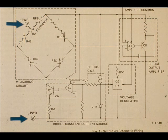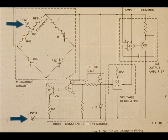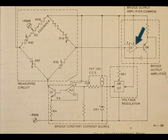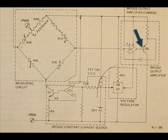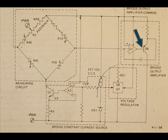24 volts DC is applied across the power positive and the power negative terminals. The bridge unbalance is fed as a negative input to the bridge output amplifier, A-1. This causes the output of A-1 to drive the base of transistor Q-8 in a more negative direction, causing it to conduct more current.